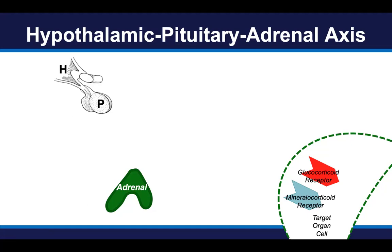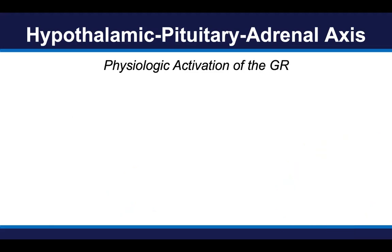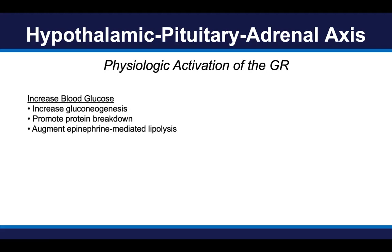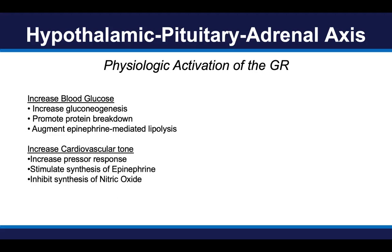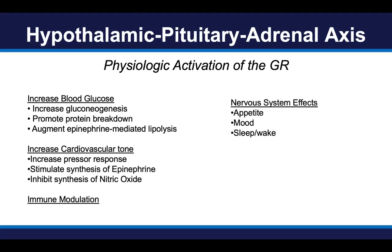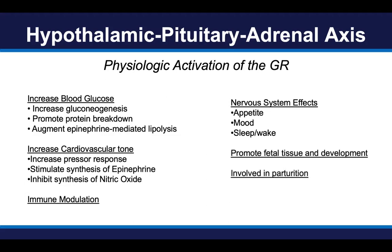Before we talk about the hypothalamic pituitary adrenal axis, let's talk about the receptors — what happens when the hormones of the adrenal cortex act on these receptors. Activation of the glucocorticoid receptor by cortisol does many things. It can regulate blood glucose and cardiovascular tone and blood pressure. It is important in the modulation of our immune system. It has multiple nervous system effects such as appetite, mood, and sleep regulation. It's important in the development of fetal tissue, the induction of labor, and many other important bodily functions. The activation of the glucocorticoid receptor is critical in many tissues, cells, and organs in the body.